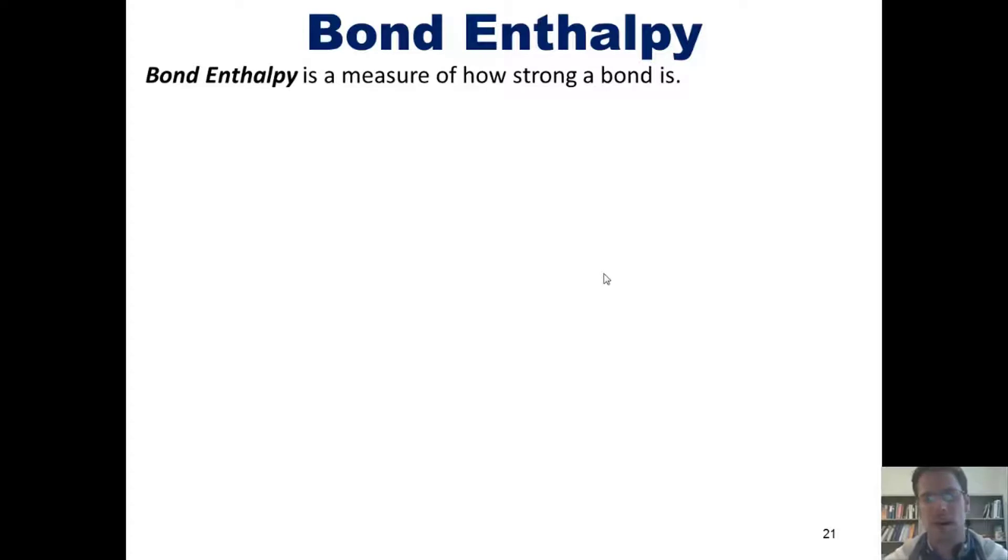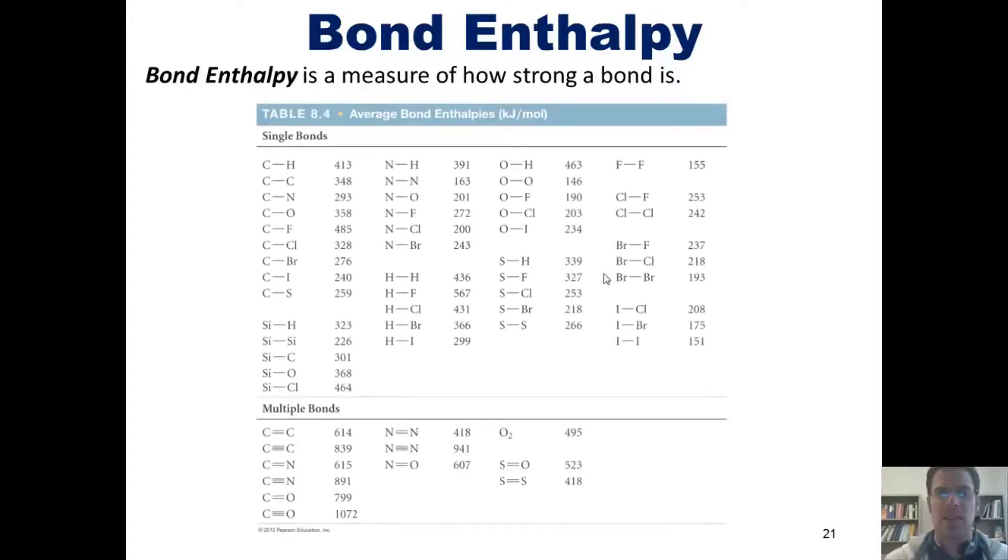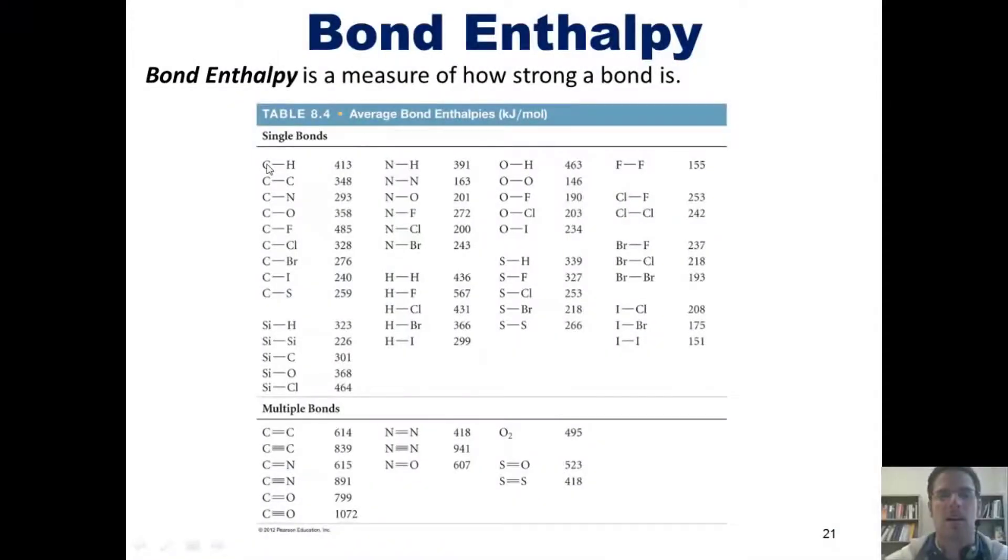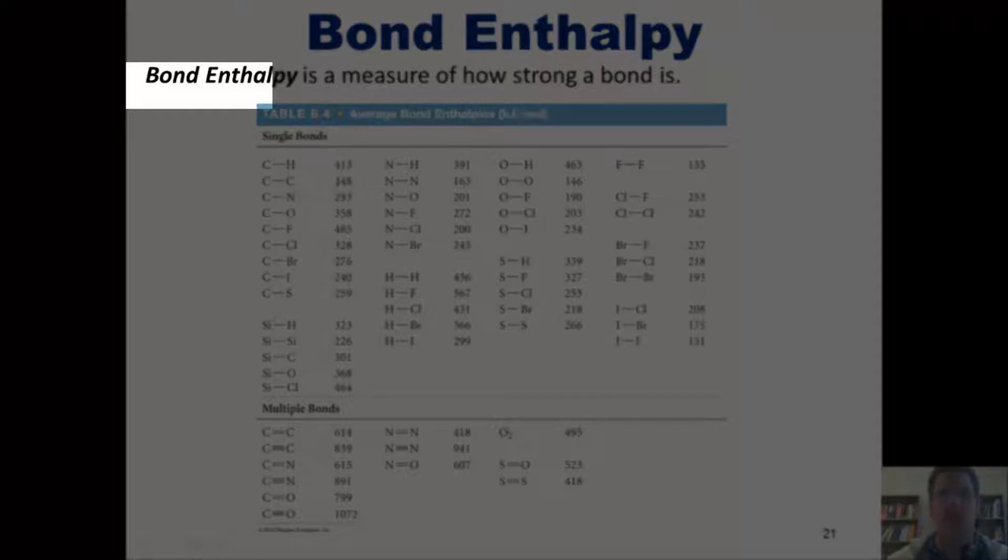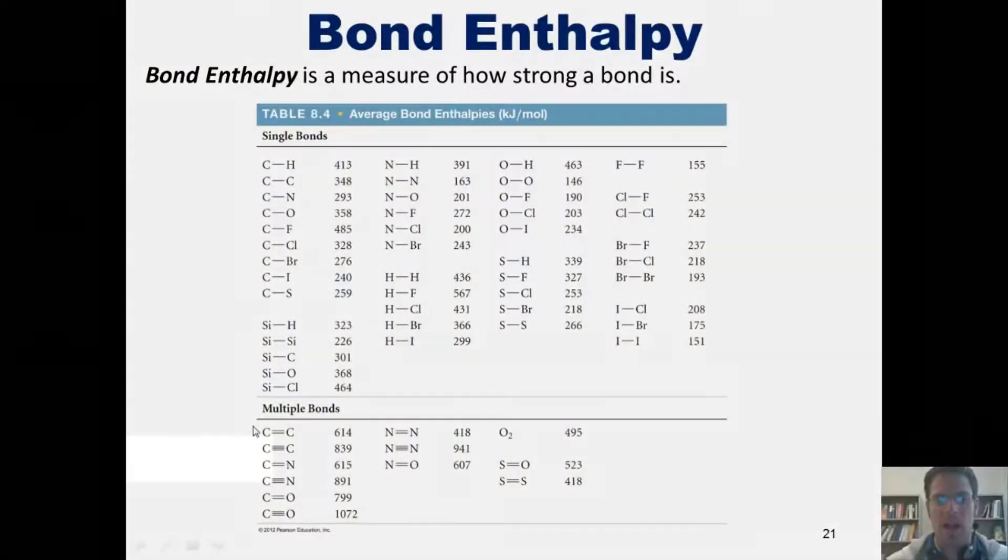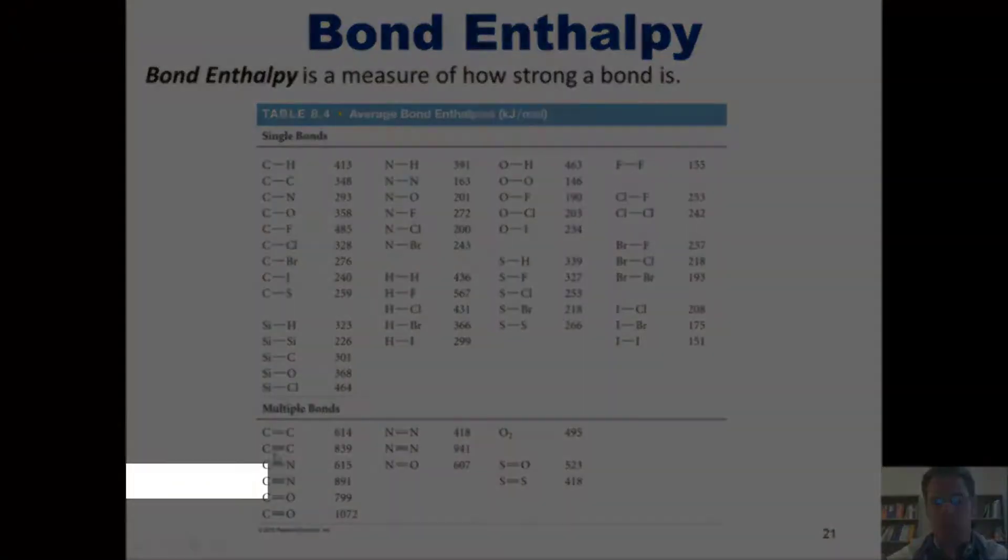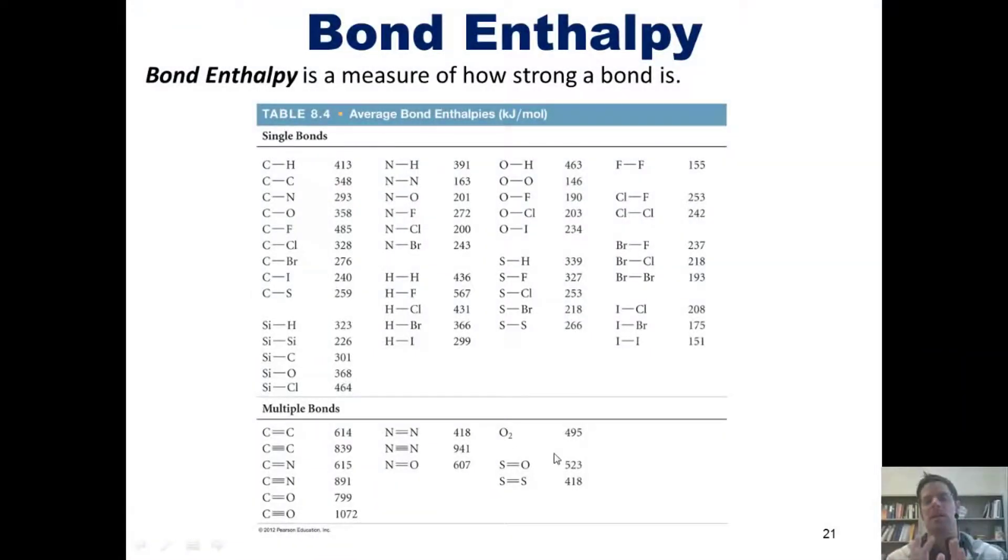We now arrive at this topic of bond enthalpy. Bond enthalpy is a measure of how strong a bond is. We can see that illustrated in this table. For example, a carbon-hydrogen bond, when it is combusted, gives off 413 kilojoules per mole per carbon-hydrogen bond. Similarly, a carbon-carbon single bond is worth 348 kilojoules per mole, while a carbon-carbon double bond is worth 614. Not surprisingly, a carbon-carbon triple bond goes up to 839.